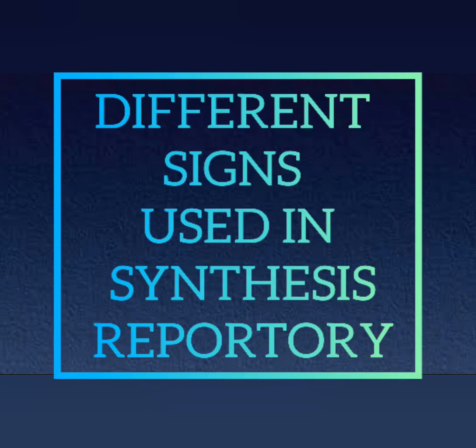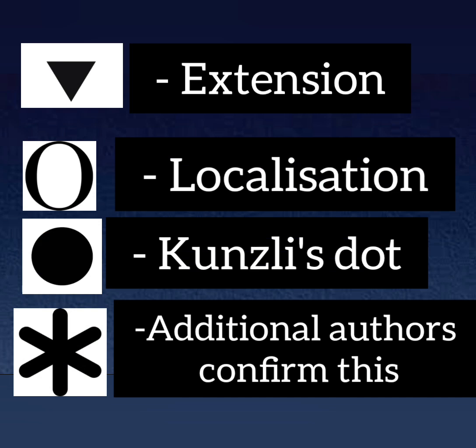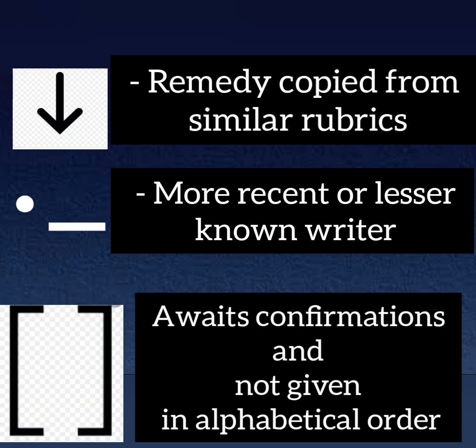Different signs used in Synthesis Repertory: an inverted triangle for extension, 'o' for localization, dot-dot for Knerr's dot, and asterisk for additional authors confirming a remedy. An inverted arrow mark indicates a remedy copied from similar rubrics, a dot indicates a more recent or lesser-known writer, and square brackets indicate additions whose confirmations are not given in alphabetical order.